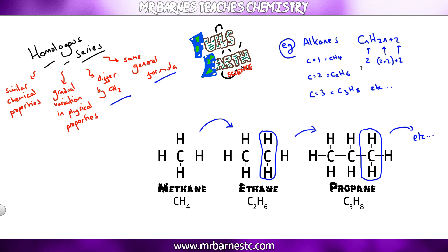The part where it says a gradual variation in physical properties, if we look at boiling points for example, as the chain length increases so does the boiling point. So there is a gradual variation. And then finally, similar chemical properties, the alkanes all react with oxygen to form carbon dioxide and water. So they react the same way.